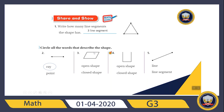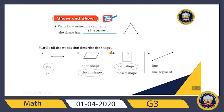Number three: is this shape an open shape or a closed shape? Can you see that the side is open? Of course not — so that's a closed shape. Number four: this shape has three sides and they don't meet each other at the same point, so it's an open shape.